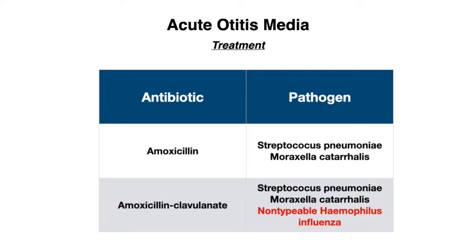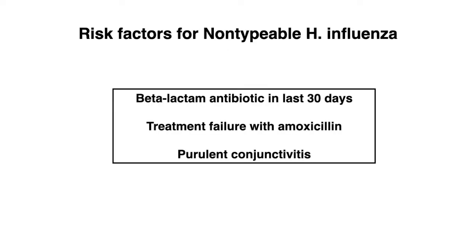So what are the risk factors that we consider when thinking about non-typeable H. influenzae? These include if the patient has had a beta-lactam antibiotic given in the last 30 days, has had treatment failure with amoxicillin while still having symptoms consistent with acute otitis media, and also if they have findings of purulent conjunctivitis along with symptoms of acute otitis media — because H. influenzae is more likely to cause this conjunctivitis compared to other pathogens.